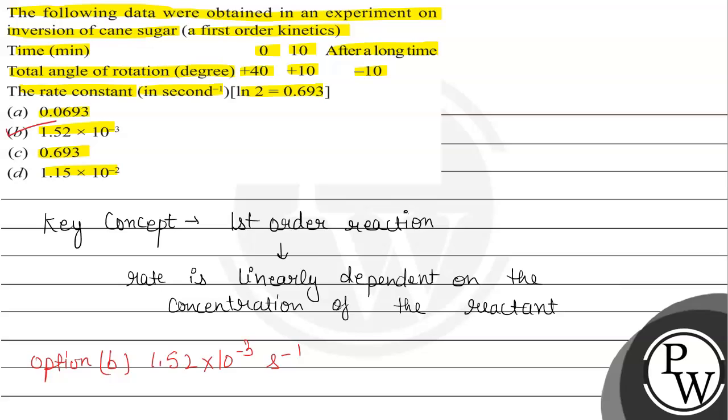So final answer will be option b, 1.52 x 10^-3 and this is in second inverse. So this is the final answer and options a, c, and d are incorrect. Hope you understood it well. Best of luck.